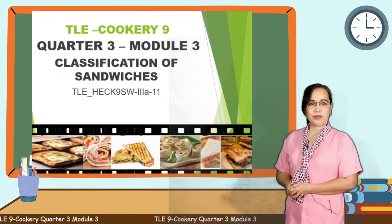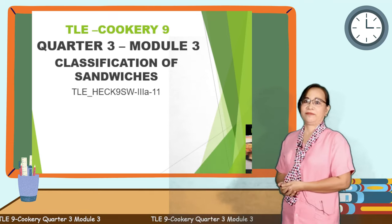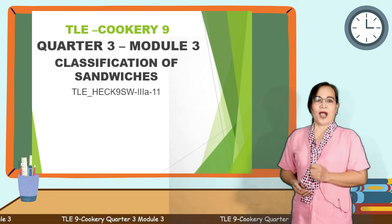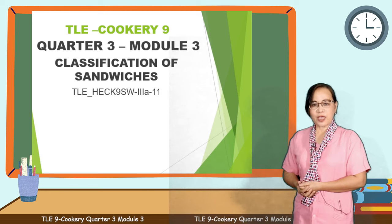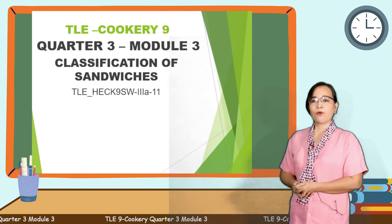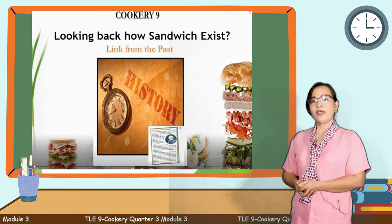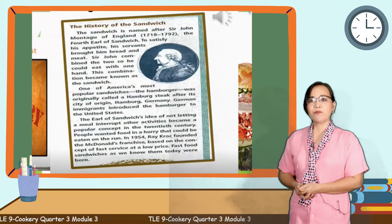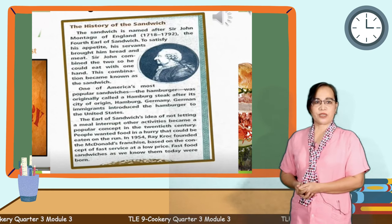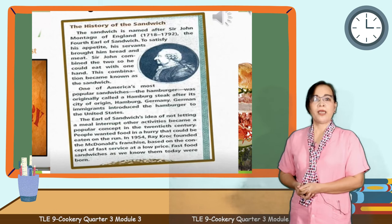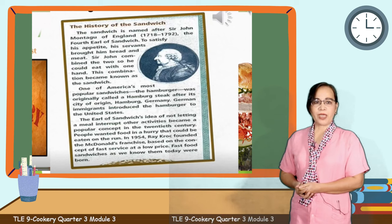With those features and words for unity, how did you come up with your answer? Do you have any idea of our lesson for today? You got it right! Our lesson for today is quarter three, lesson three, which is about the classification of sandwiches. Sandwiches are one of the most popular food today. The sandwich is named after Sir Jan Montago of England, the Fourth Earl of Sandwich. To satisfy his appetite, his servant brought him bread and meat. Sir Jan combined the two so he could eat with one hand. This combination became known as the sandwich.